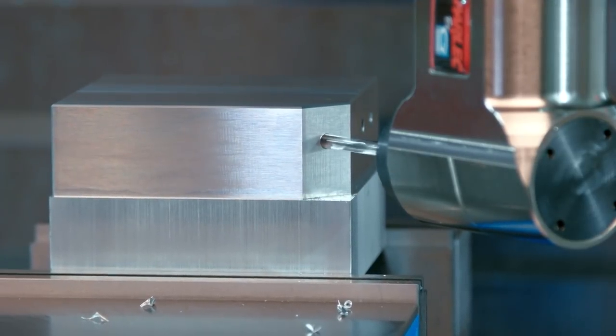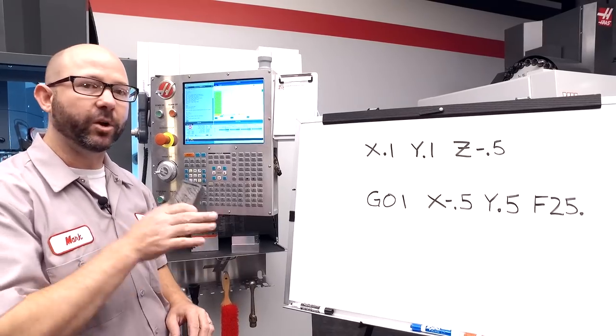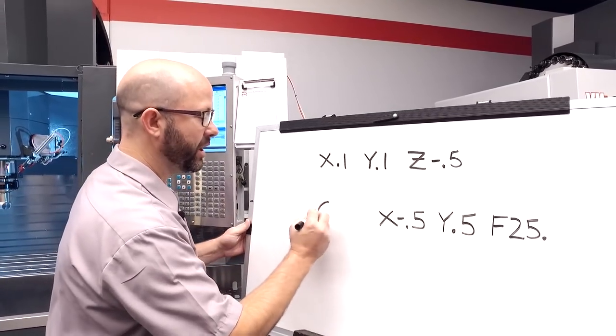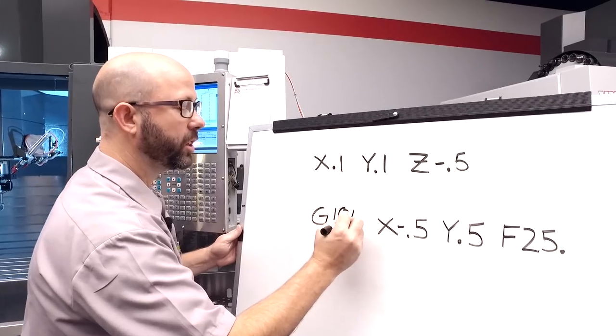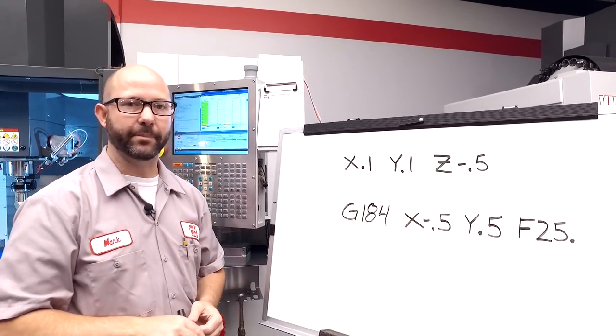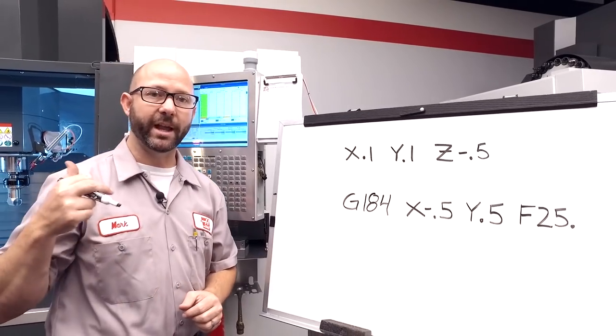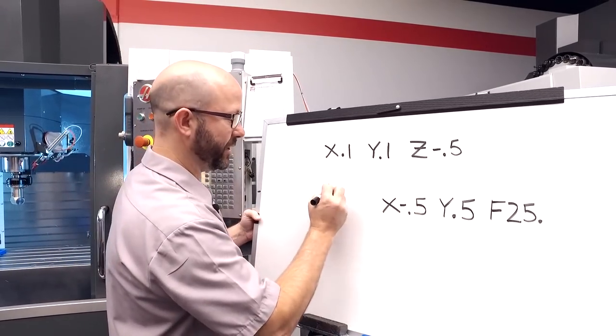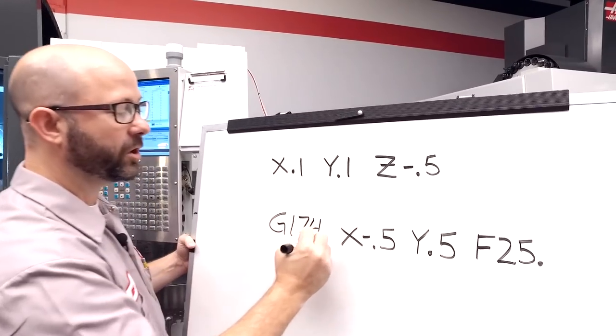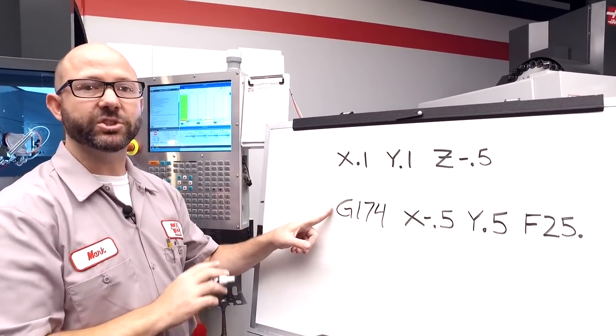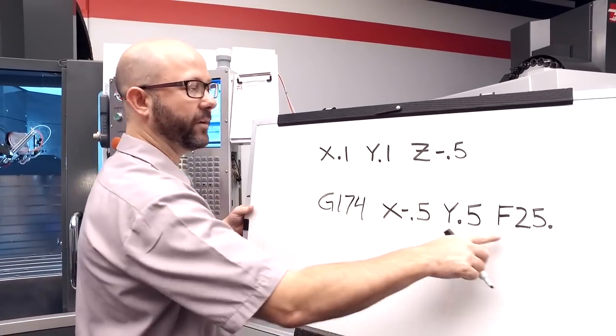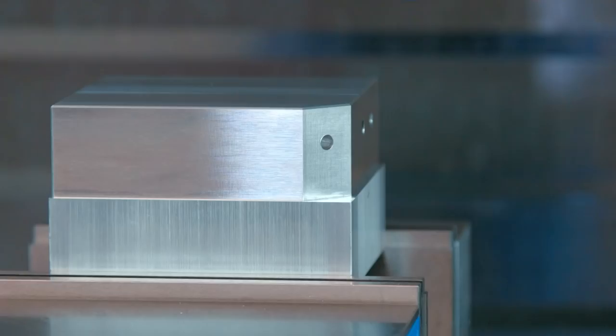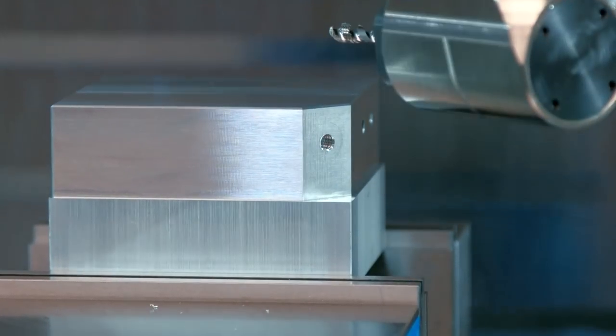Now, tapping, that's a different cycle altogether. All we have to do to tap at any angle we want, vector tapping, is change our G01 to a G184 for clockwise tapping, for a right hand tap. Now, again, I'm forgetting that we're using a right angled head that reverses the direction of my spindle. So, we're not going to use a G184. We're going to use a G174. This is a counter-clockwise tapping cycle.